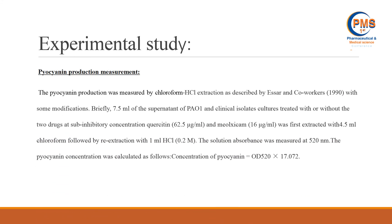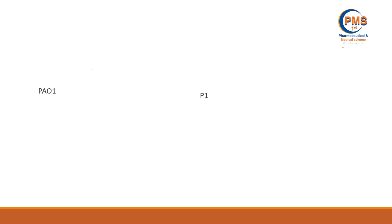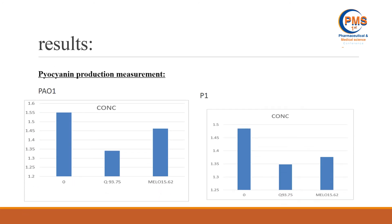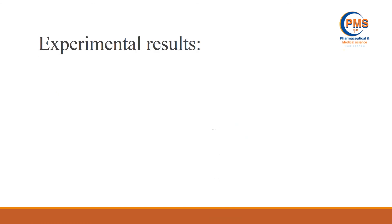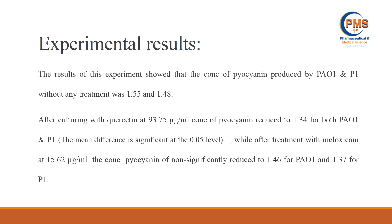The last experiment was pyocyanin production using a chloroform extraction method. Results showed that pyocyanin production by PA01 and P1 without any treatment was 1.55 and 1.4 respectively. After culturing with quercetin at 93.75 micrograms per milliliter, pyocyanin reduced to 1.3, while after treatment with meloxicam the concentration non-significantly reduced to 1.46 for PA01 and 1.37 for P1.